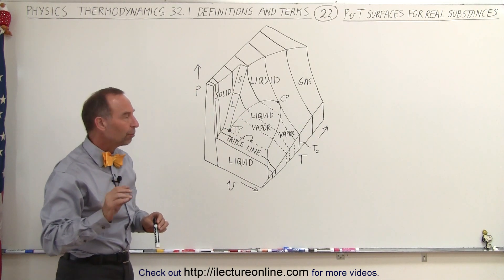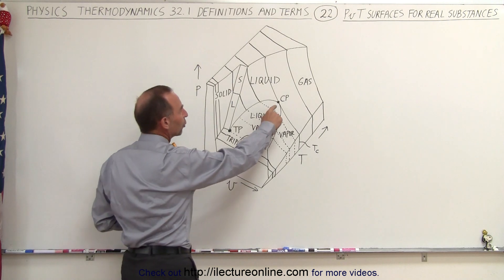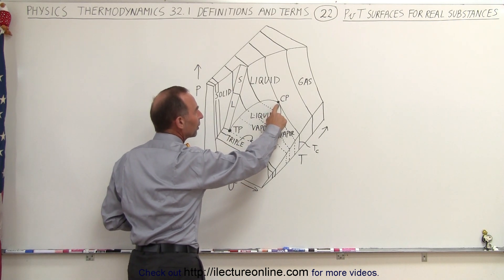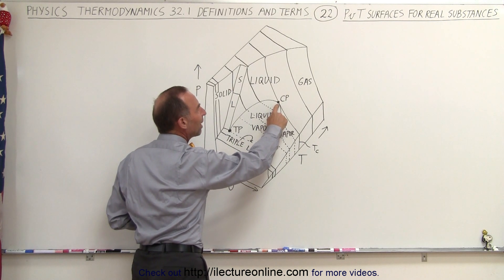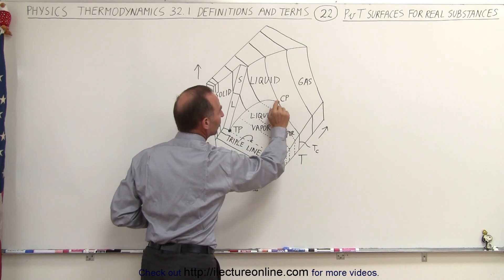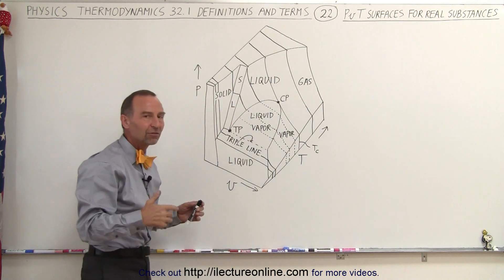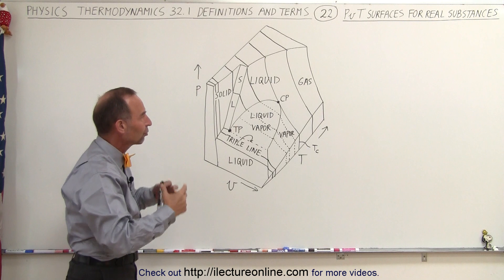Now notice there are some special points on this graph. We have what we call the critical point. The critical point is the point at which no vapor can exist if the temperature exceeds that. If we go beyond the critical point, only gas can exist if the temperature is hot enough and the pressure is low enough.